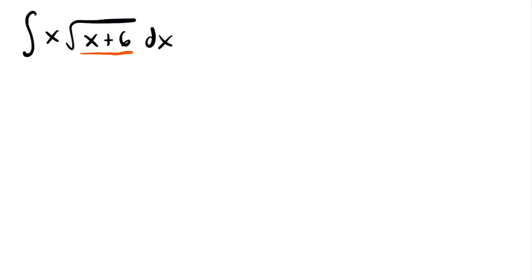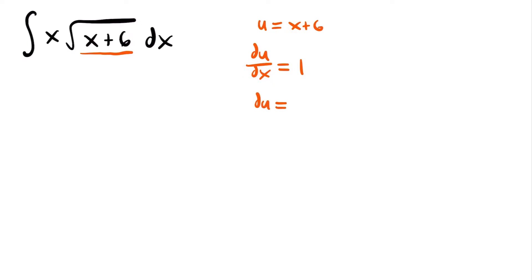So if we do that in this case, if we set x plus 6 equal to u, we'll have that u is equal to x plus 6. Then what we do for u-substitution is take the derivative of what we set equal to u with respect to x. So du/dx will be equal to the derivative of x, which is just 1 — when you take the derivative of a variable to the power of 1, it equals its coefficient, which is 1. And the derivative of 6 is just 0 because the derivative of all constants is 0. So du/dx is equal to 1, and multiplying both sides by dx gives us du = dx.